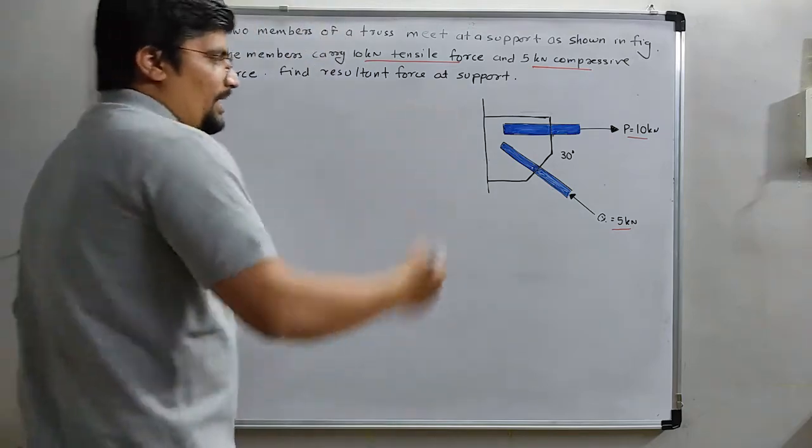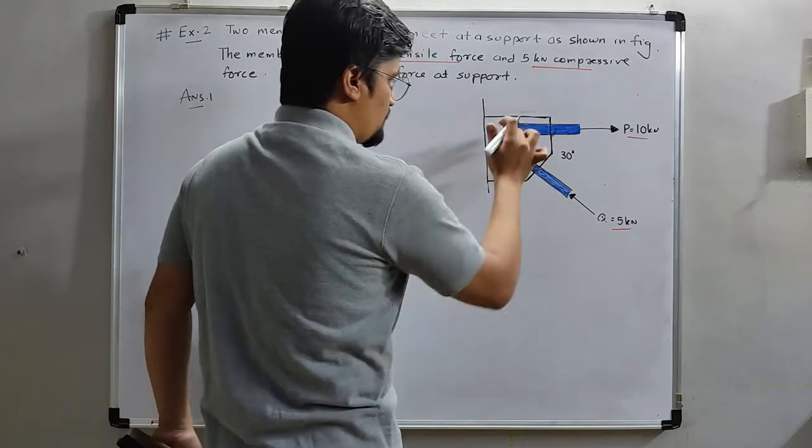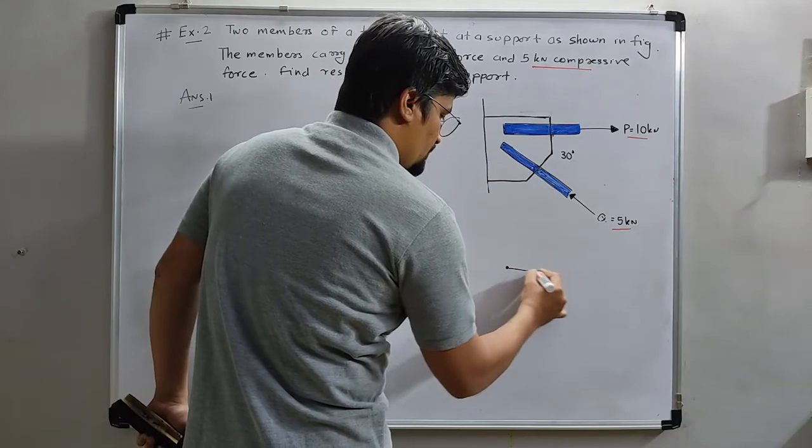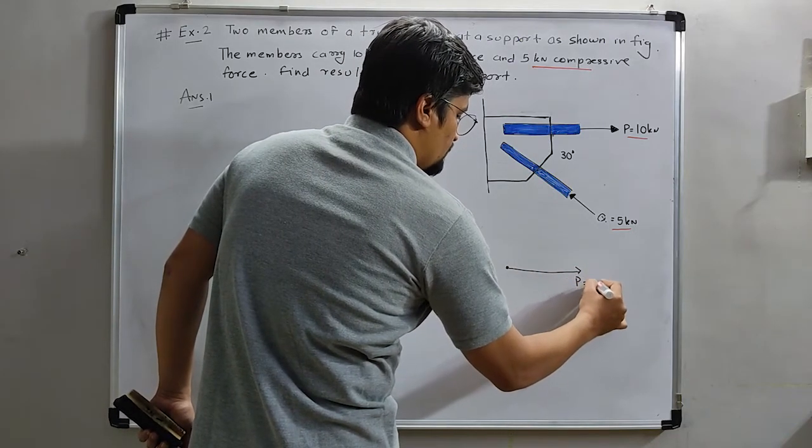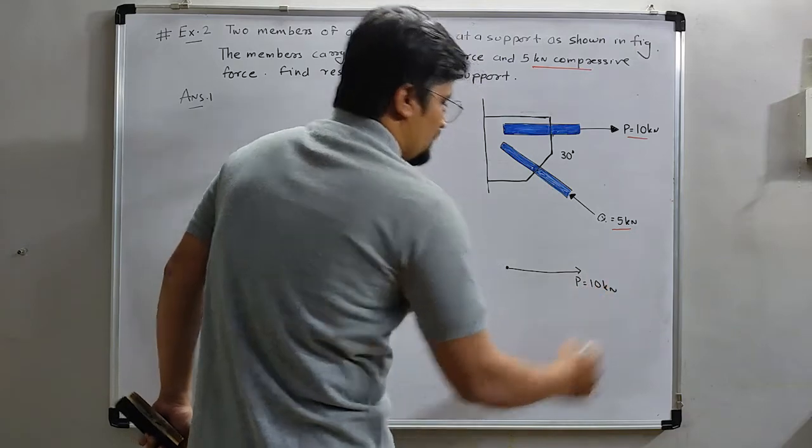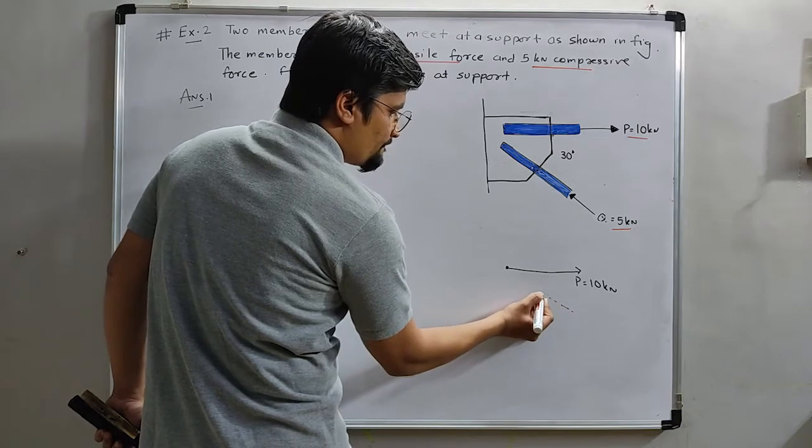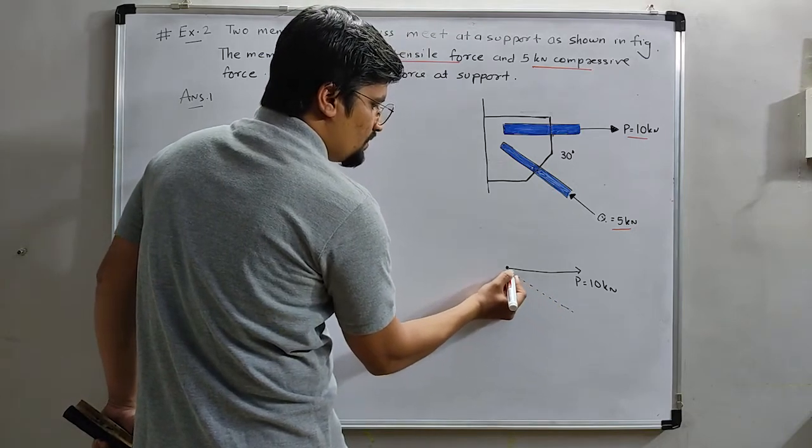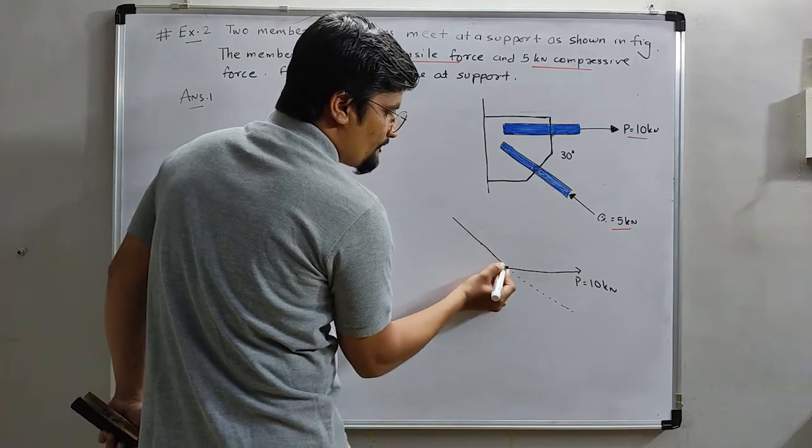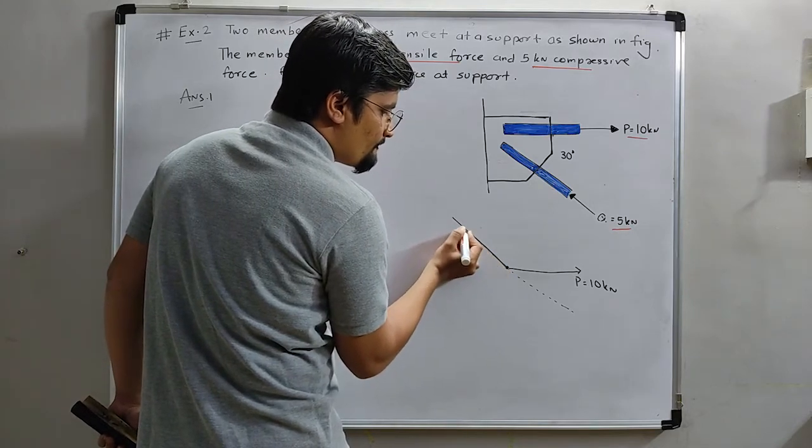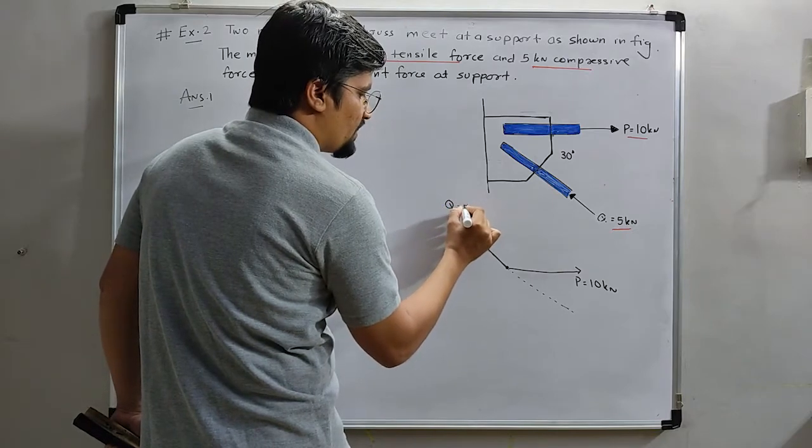I can say that here it is the point. The P will go here, means P is equal to 10 kN. And if the Q direction is here, then it will go like this in the inside zone. Q is equal to 5 kN.